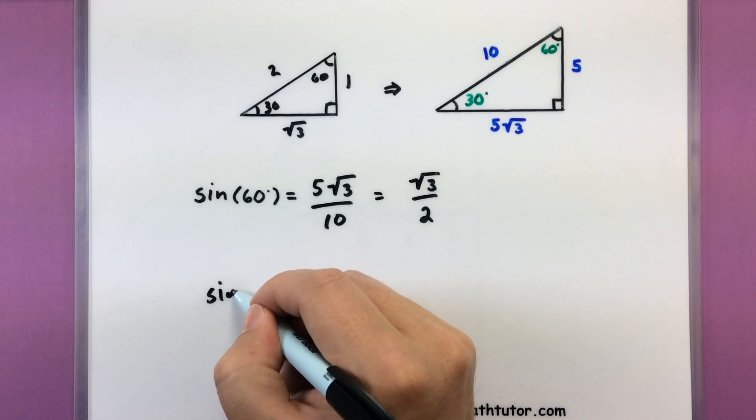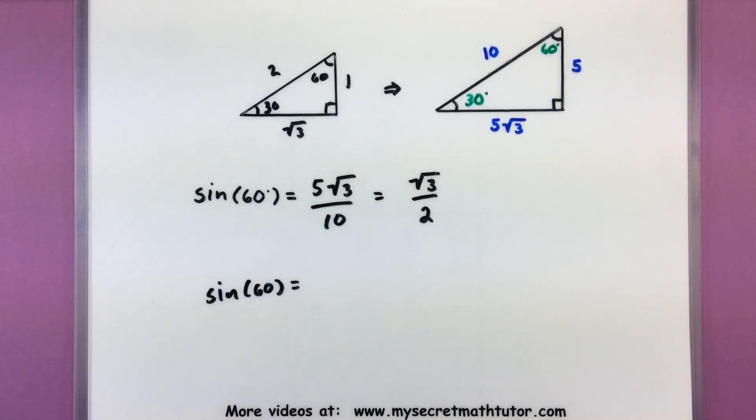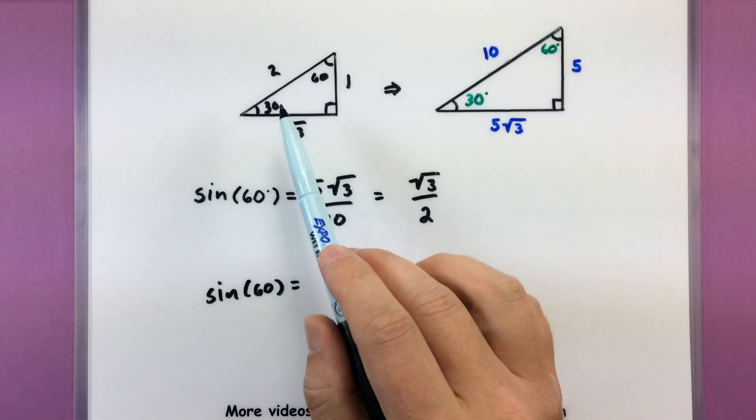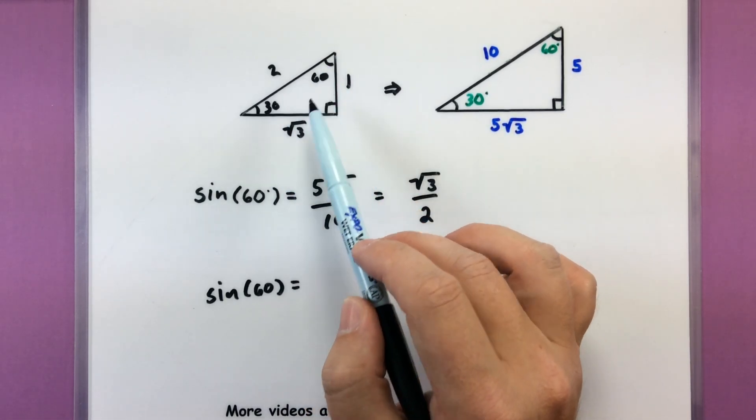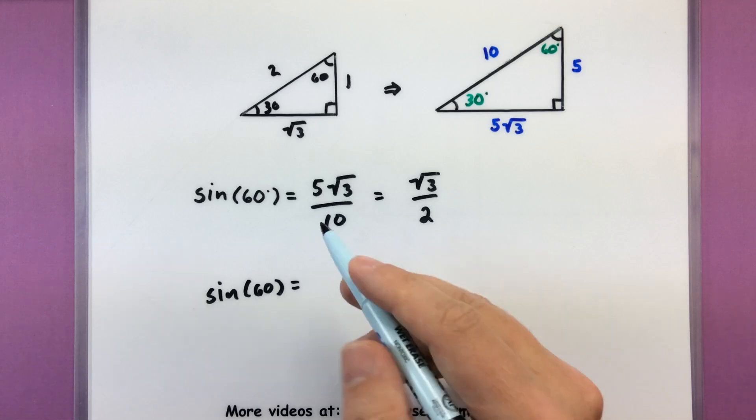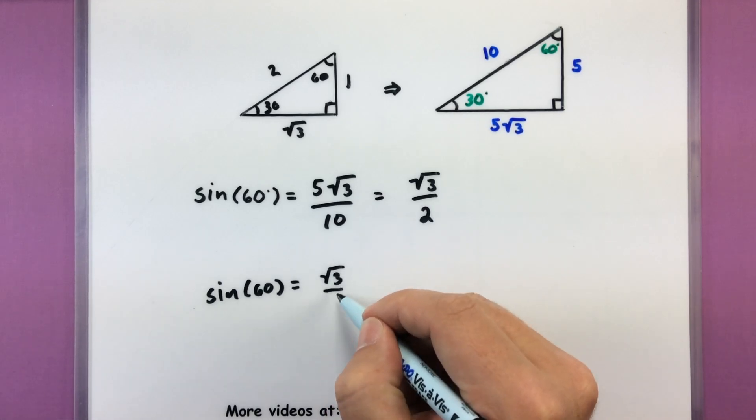And that's the exact same answer you'd get even if you used our smaller triangle. So sine of 60 degrees would be the opposite over the hypotenuse, or just square root of 3 over 2.